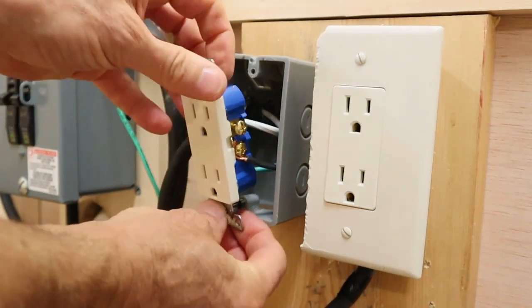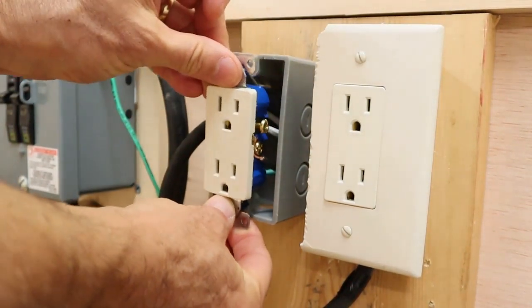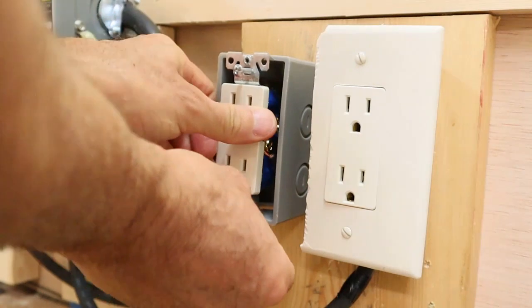After all three wires are connected to the outlet, then you can line the outlet up with the box and screw the outlet to the box.